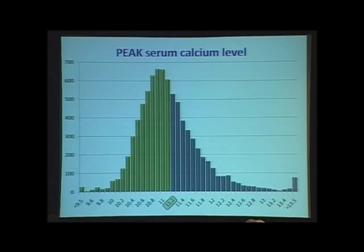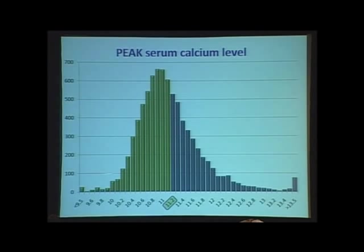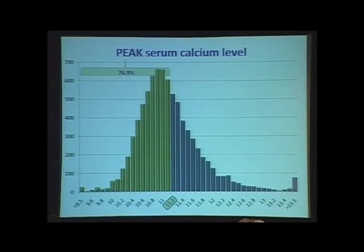At our lab, the upper limit of normal is 10.2, so our cutoff is 11.2. Once you got to 11.2, that was okay to send someone for surgery. But remember, this is a peak serum calcium level — the highest one the patient ever gets. All of those patients here never got to 11.2. If your lab's upper limit is 10.4, that cutoff becomes 11.4. This left out 77% of people who will apparently never, ever get a calcium level above 11.2.